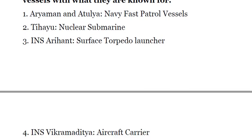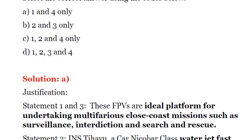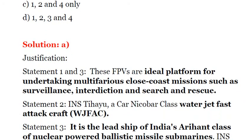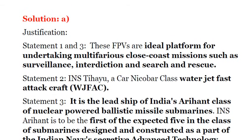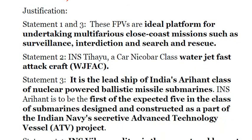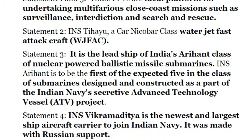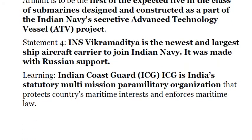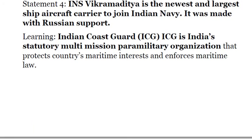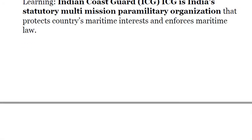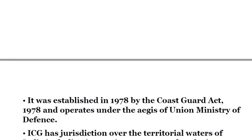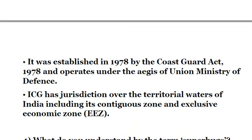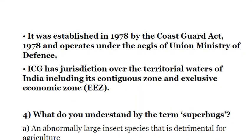R.M.1 and Atulia are Navy fast patrol vessels that help in undertaking multifarious close-coast missions such as surveillance, interdiction, and search and rescue. INS Teahu is a water jet fast attack craft. INS Arihant is a nuclear-powered ballistic missile submarine. INS Vikramaditya is the largest aircraft carrier to join the Indian Navy. Additionally, the Indian Coast Guard is a statutory multi-mission paramilitary organization established under the Coast Guard Act of 1978, under the Union Ministry of Defence, exercising jurisdiction over India's territorial waters including the Contiguous Zone and Exclusive Economic Zone.